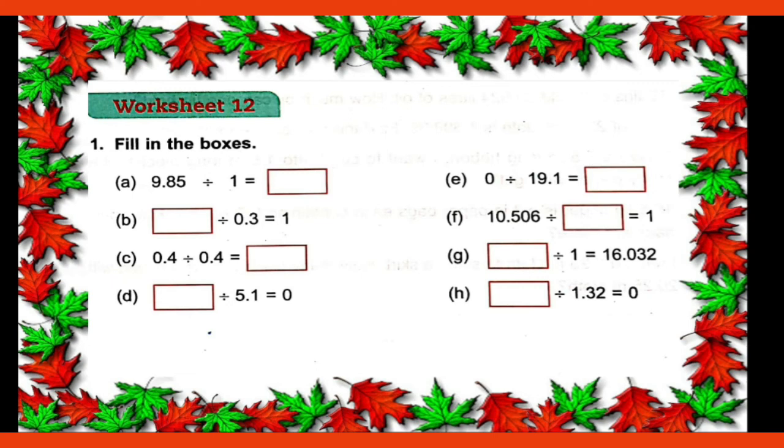So fill in the blanks. Like 9.85 divided by 1. Any whole number when we divide by 1, our answer was that same whole number. Now if we divide a decimal number also by 1, that means our answer should be the same number. Means 9.85. So this is the property of decimal number also.